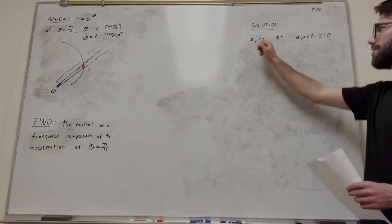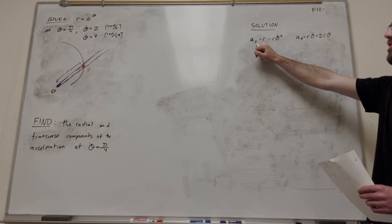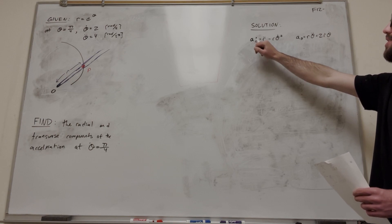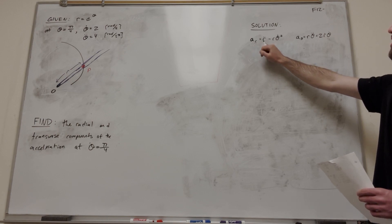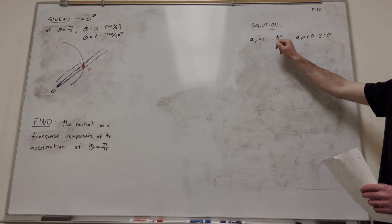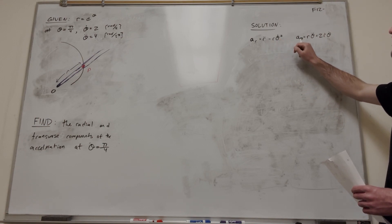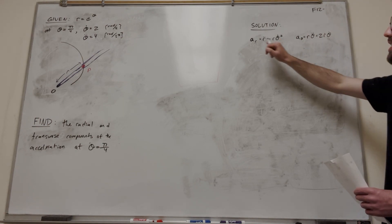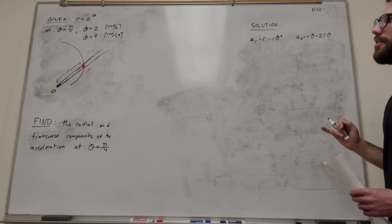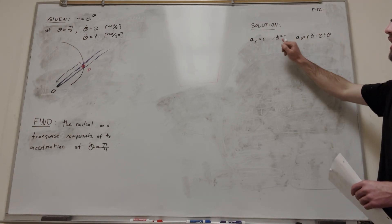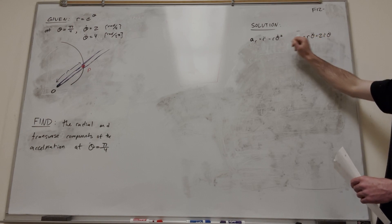So our equations for those: the transverse component, the radial acceleration, is r double dot minus r theta dot squared. And then our transverse component is equal to this. So basically, we have to find these things and plug them in. We're given theta dot and theta double dot, so we already have those things.